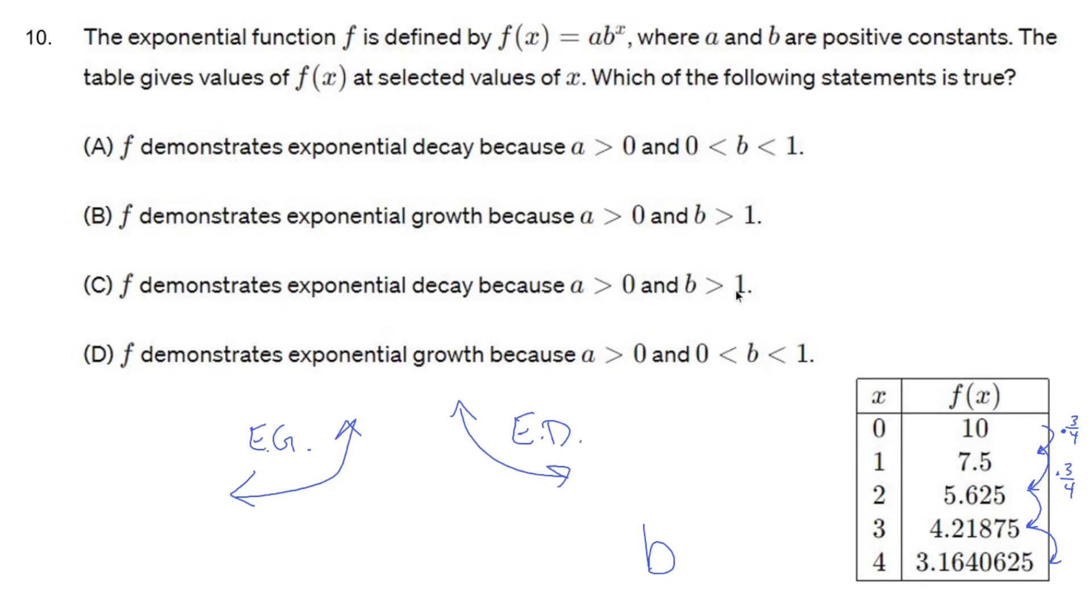Like if I were to make A four, this would become 40, and then this would still be 30. And then that would still multiply by three quarters to move my way down. So B in this case is three quarters.